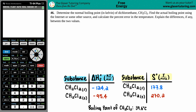Problem 46: determine the normal boiling point in Kelvin of dichloroethane, CH₂Cl₂, then find the actual boiling point using the internet, and calculate the percent error in temperature and explain any differences between the two values. Let's start with the first part: finding the normal boiling point in Kelvin.